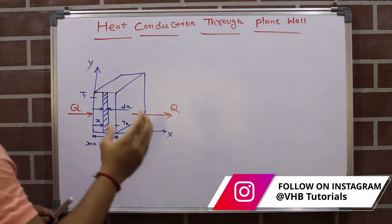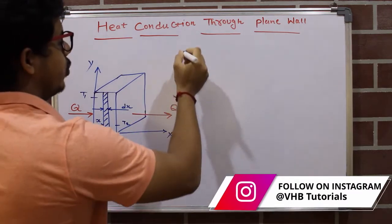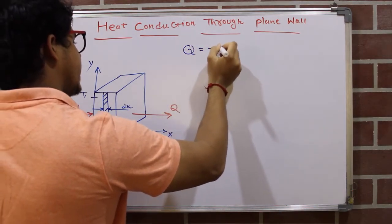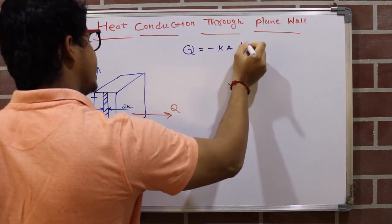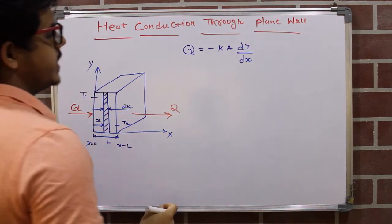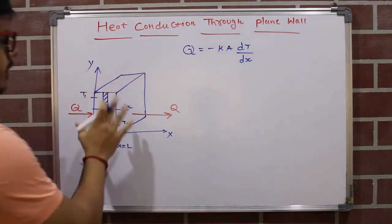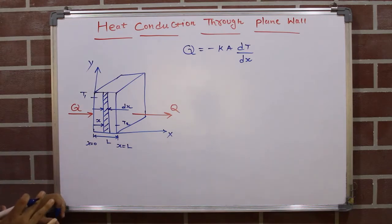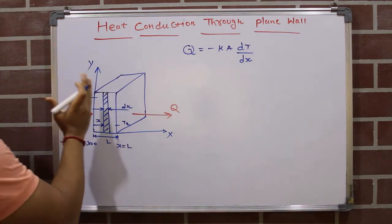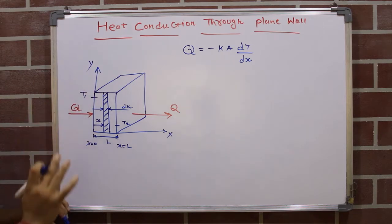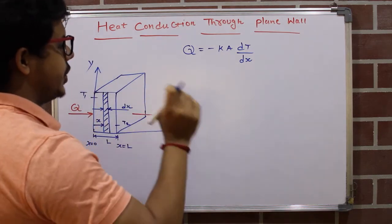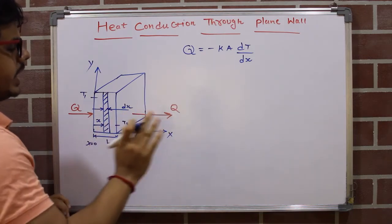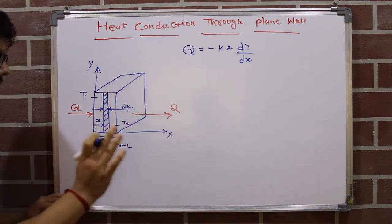The first thing we have to do is write the Fourier's law equation. The Fourier's law equation is: Q = −kA · dT/dx, where k is the thermal conductivity — in our case k is constant — and area A is also constant, being the area perpendicular to the heat flow. We are also assuming steady-state heat conduction with heat flowing only in the x-direction, that is, one-directional heat flow.